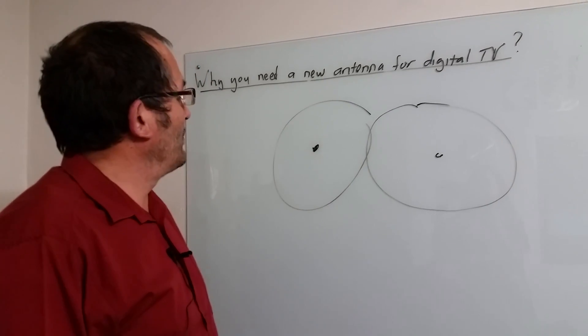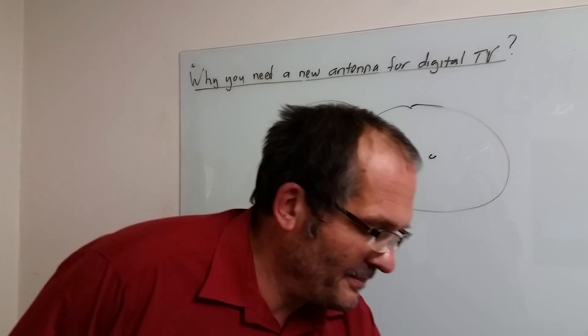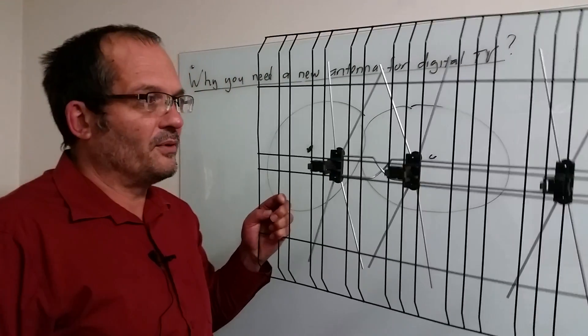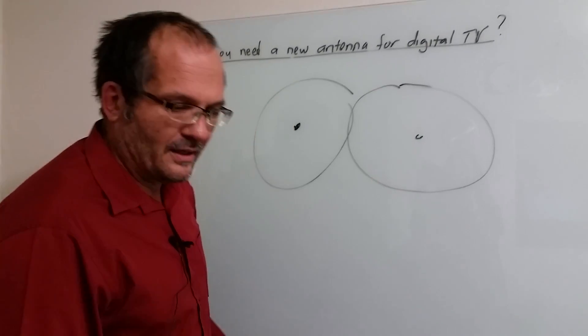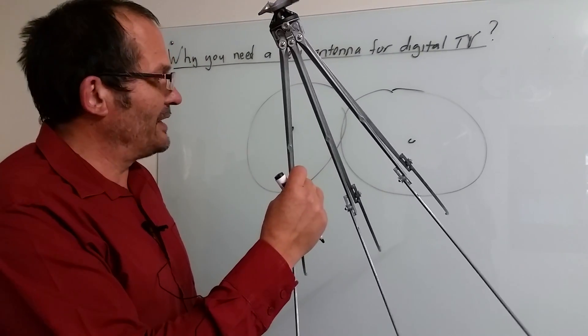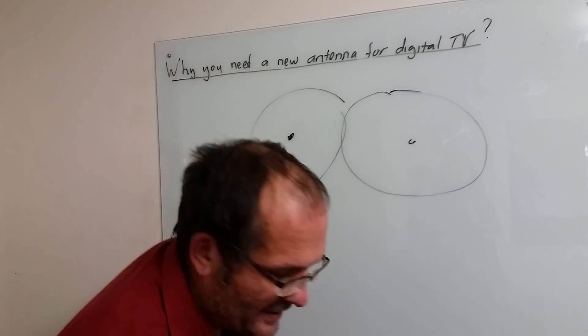Many people are asked the question why may you need a new antenna for digital TV. Now the typical old antennas I've shown it before looks like this, other types of shapes available as well, and that's of course why we've developed the new digi ant because of the requirement for people to have new antennas.